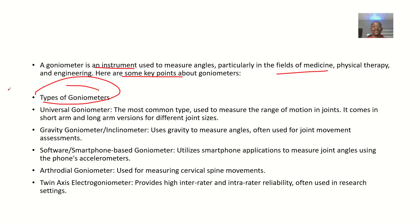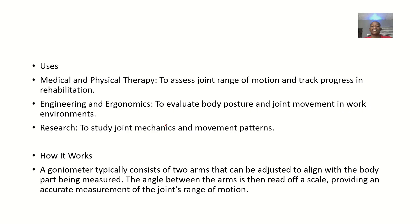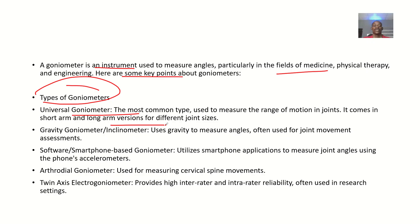For the types of goniometer, we have the universal goniometer, which is the most common type and is used to measure the range of motion in joints. It comes in short-arm and long-arm versions for different sizes. The picture shown here is a universal goniometer.